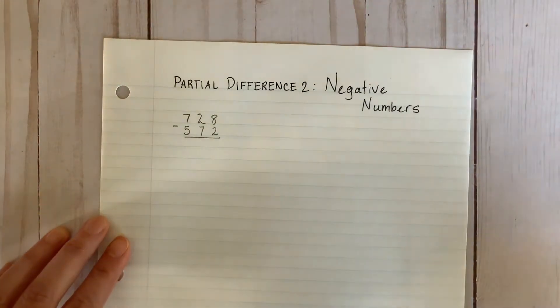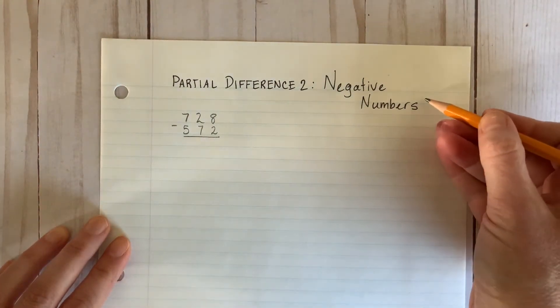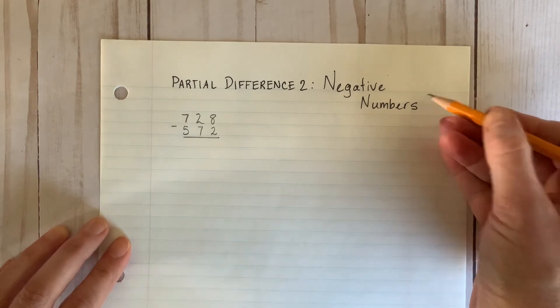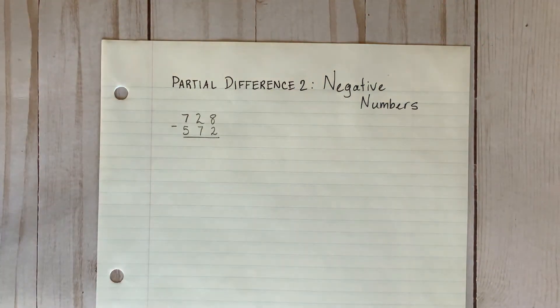Let's take a look at one more method, partial differences using negative numbers. An advantage of this method is that you can start solving on any side of the equation.